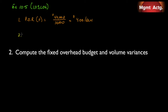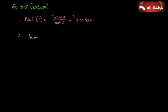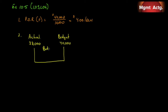Number two asks us to compute the fixed overhead budget and volume variances. Our actual fixed overhead costs were $38,000. Our budget was $40,000. So we budgeted for $40,000 and came in at $38,000. That gives us a budget variance of $2,000 favorable.